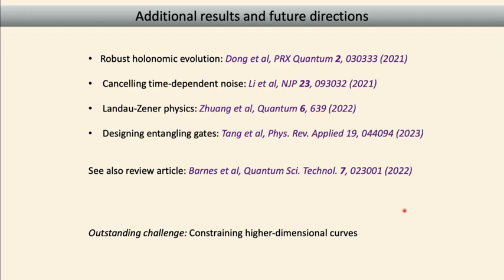You can also make Landau-Zener type physics more robust when you have an avoided crossing in the energy spectrum that fluctuates due to environmental noise, as is often done in superconducting qubits. We've also turned the problem around: instead of cancelling noise, you can use the curve to measure the amount of entanglement being generated during the evolution, enabling identification of the fastest possible entangling gates given constraints on the waveforms.